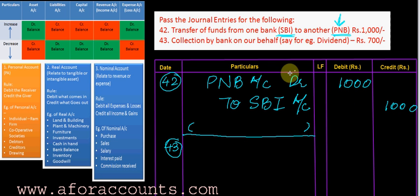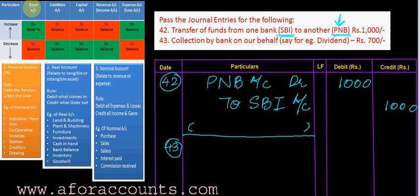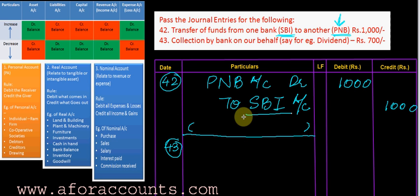My PNB balance, which is an asset, is getting increased by 1000 rupees — so I have debited it. At the same time, SBI bank balance is also an asset, but my SBI bank balance is getting decreased. When an asset decreases, it has to be credited.